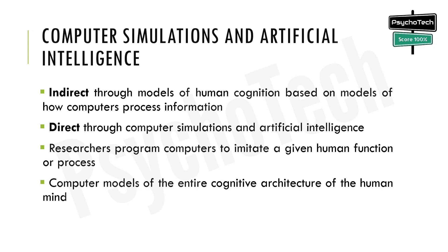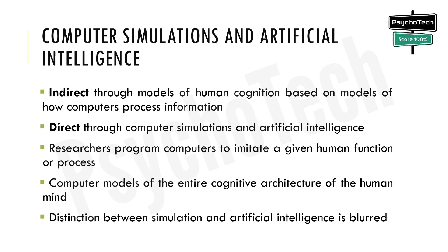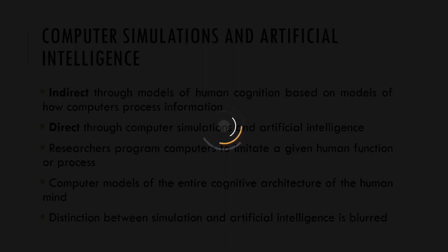Some researchers have attempted to create computer models of the entire cognitive architecture of the human mind, and their models have stimulated heated discussions regarding how the human mind may function as a whole. The distinction between simulation and artificial intelligence is sometimes blurred, and it is also possible to combine the two approaches. Through this video we have discussed the goals of research and various research methods used by cognitive psychologists.